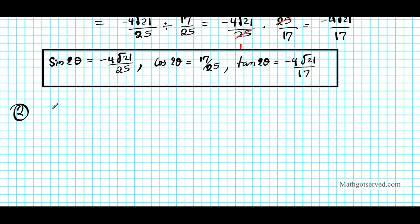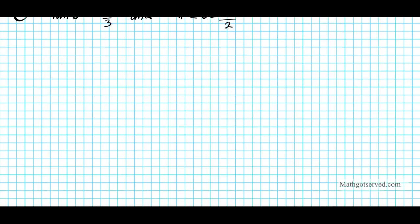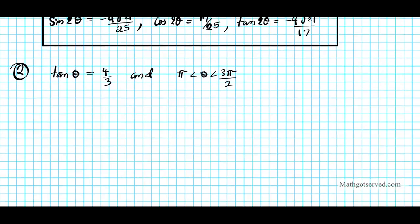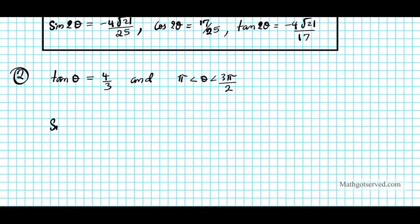For question 2, we have tan θ = 4/3, and π < θ < 3π/2. We need to find sine 2θ first. The double angle formula is sine 2θ = 2sinθ cosθ, but we're only given tan, so we need another approach.